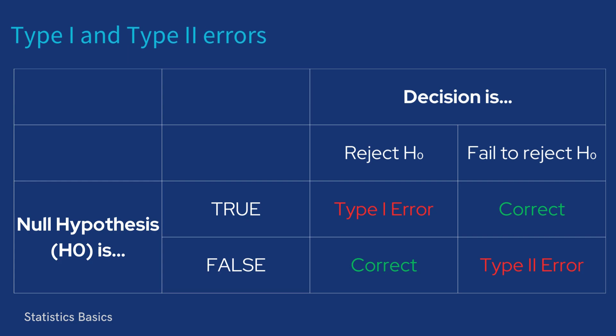Let's quickly summarize the four possible outcomes in hypothesis testing. When the null hypothesis is true and the decision is to reject the null hypothesis, a type 1 error occurs.